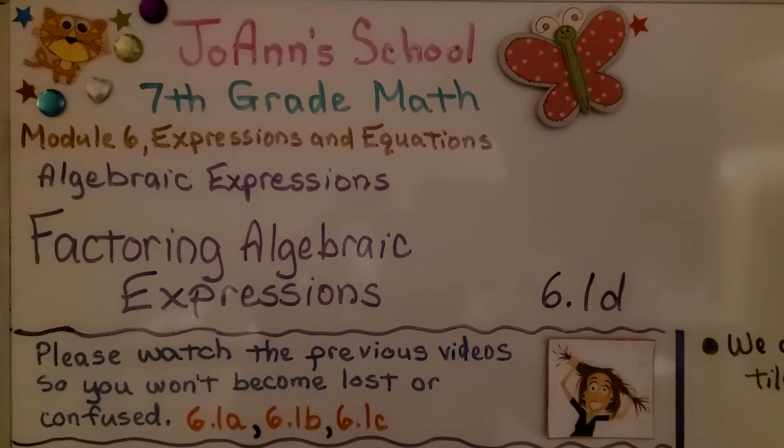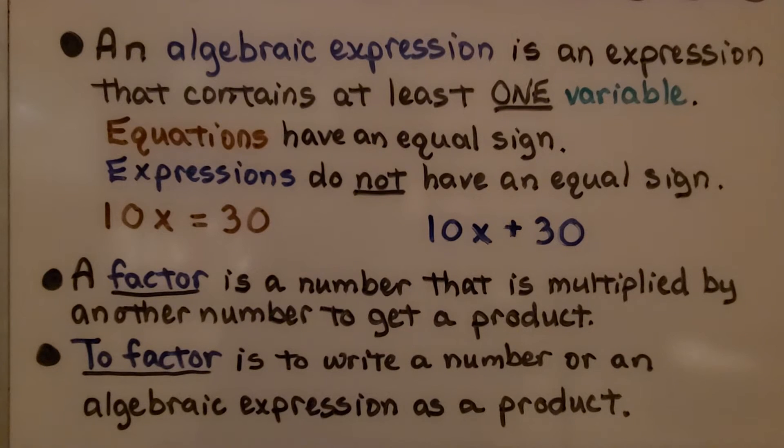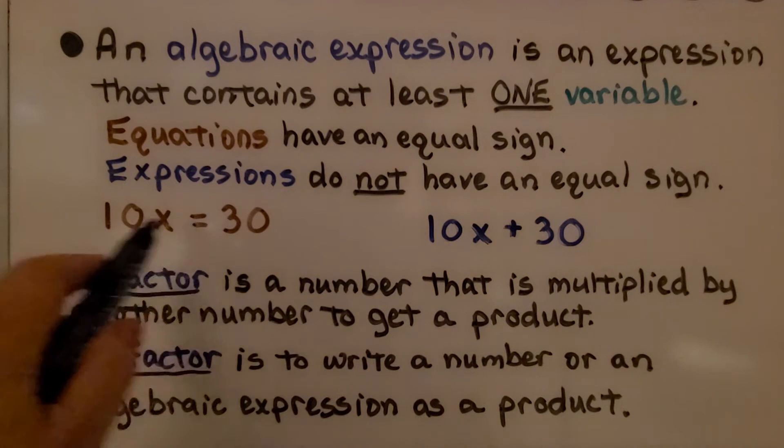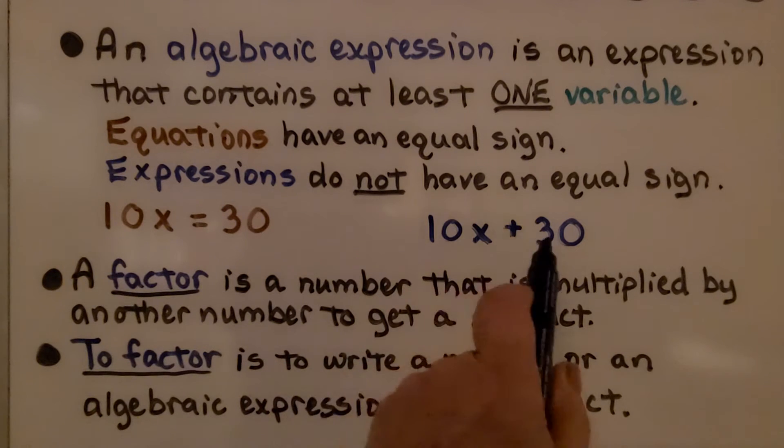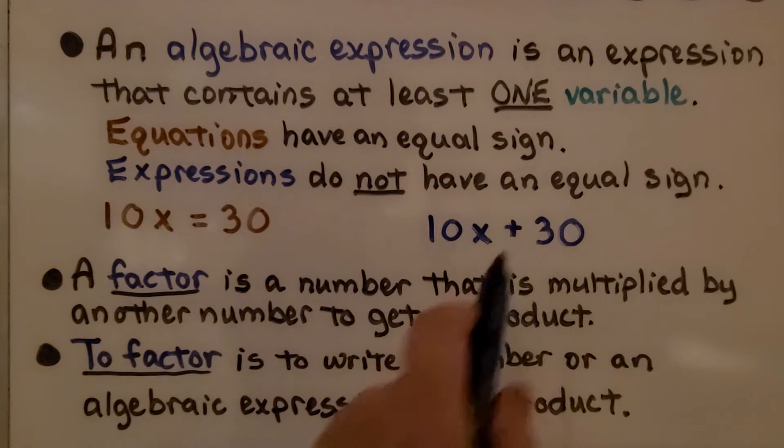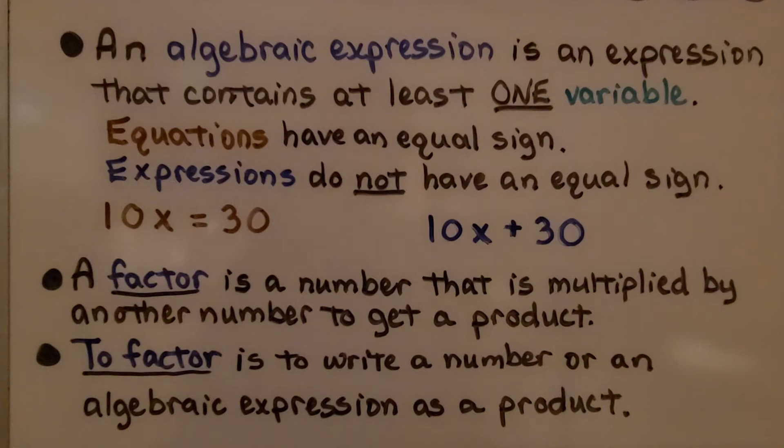Lesson 6.1d: Factoring Algebraic Expressions. An algebraic expression is an expression that contains at least one variable. Equations have an equal sign; expressions do not have an equal sign. A factor is a number that is multiplied by another number to get a product. To factor is to write a number or an algebraic expression as a product.